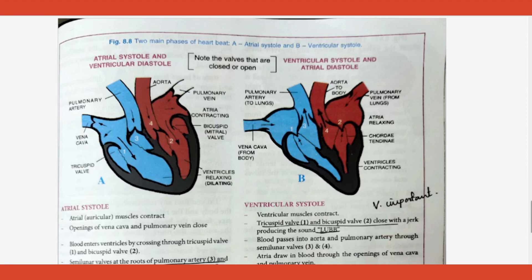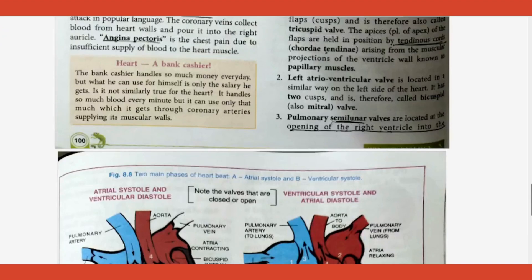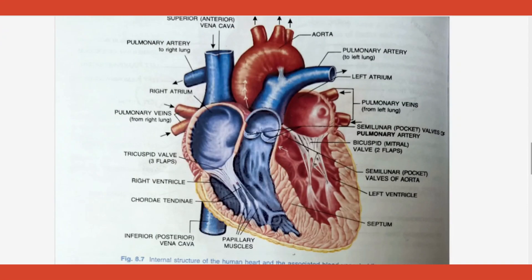From the ventricle, blood should go into the arteries — aorta on the left side and pulmonary artery on the right side — and should not come back. To prevent backflow from the ventricle into the atria, there are valves on both sides. On the right hand side it is the tricuspid valve, and on the left hand side it is the bicuspid valve — both located between the atrium and ventricle on their respective sides.